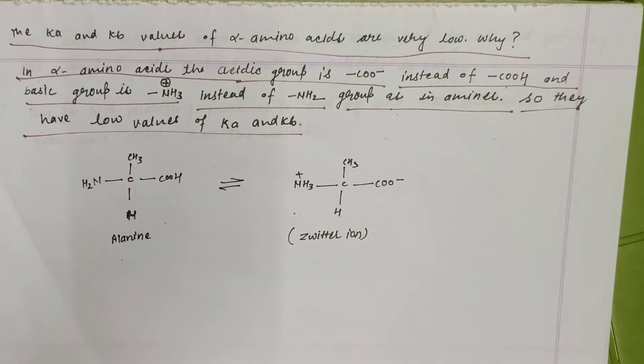Acid is present in the form of the carboxylate ion and base, the NH₂ group, is in the form of the ammonium ion. That is Ka and Kb value of amino acids are less.